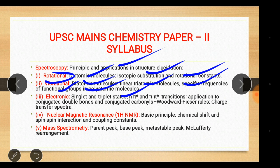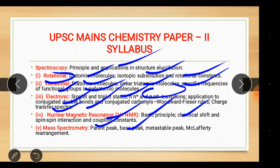Electronic transitions: n→π*, π→π* transitions, application to conjugated double bonds and conjugated carbonyls, Woodward-Fieser rules and Fieser rules, charge transfer spectra. Nuclear magnetic resonance (¹H NMR): basic principle, chemical shifts, spin-spin interaction and coupling constants. Mass spectroscopy: parent peak, base peak, metastable peak and McLafferty rearrangement.